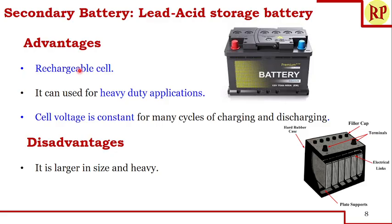Let us look into the advantages of the lead-acid battery. First, it is a rechargeable cell. Most importantly, it is used for heavy-duty applications — whenever we require more electricity, we go for the lead-acid battery. That is why we call it a lead acid storage battery: acid is the electrolyte, lead is the base of the electrodes, and it stores more electricity. Additionally, the cell voltage remains constant for many cycles of charging and discharging — for example, when using it for a home inverter, you can use it for 5 to 6 years and the 12 volts will remain constant. This is a major improvement over the dry cell and alkaline cell.